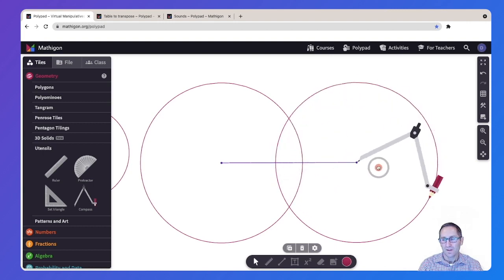There we go. And then I can draw a line to connect the two points where these circles intersect. And then I can put a little line right in the middle and I found the midpoint of that line segment.